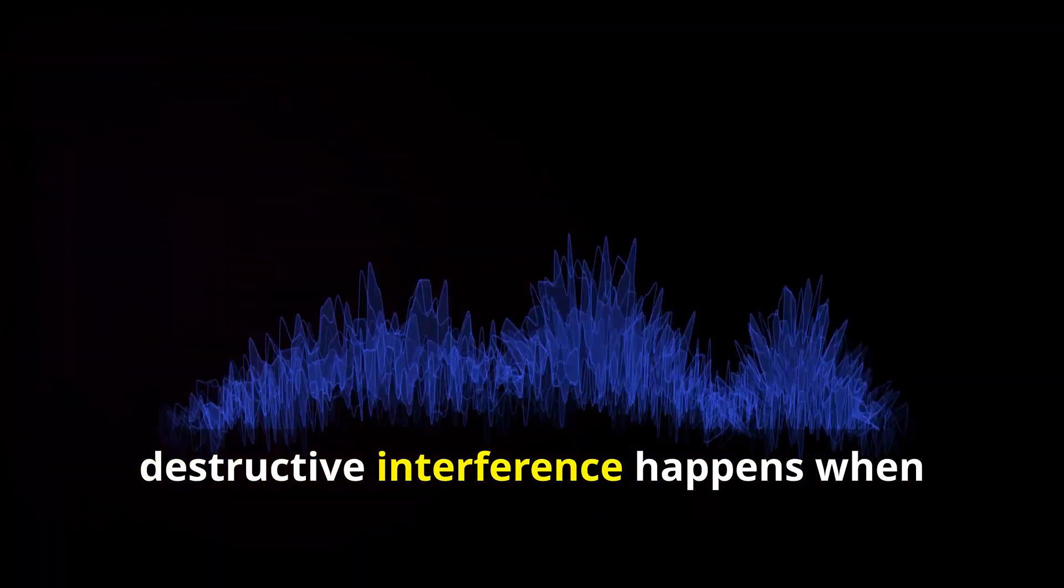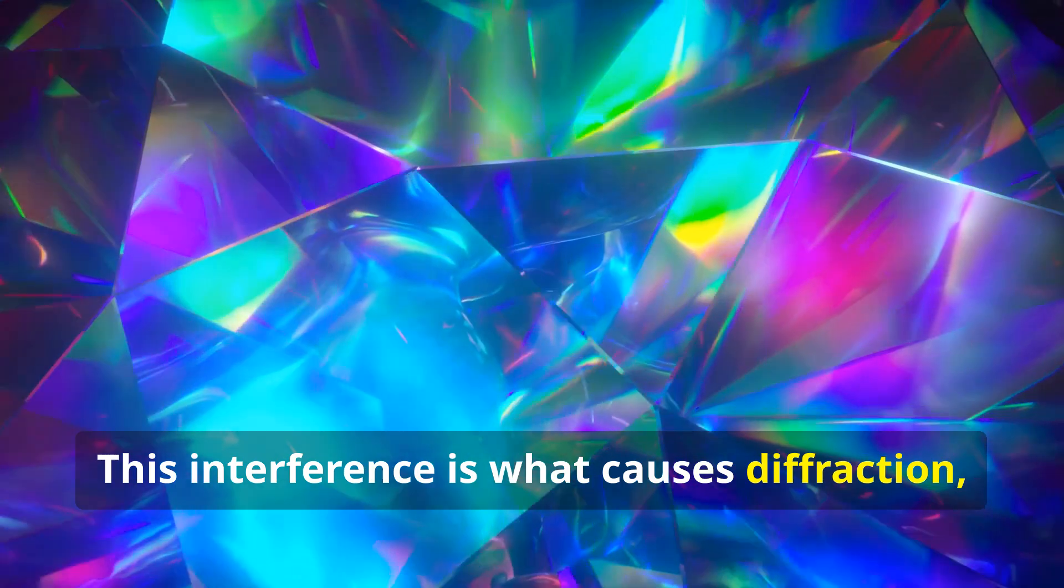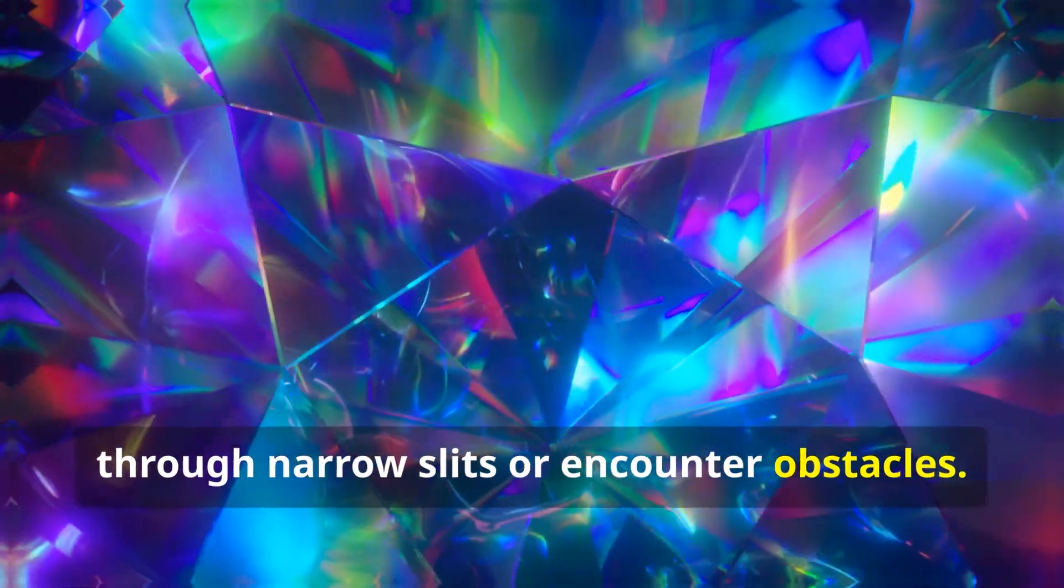On the other hand, destructive interference happens when opposite waves cancel each other out. This interference is what causes diffraction, which we can observe when waves pass through narrow slits or encounter obstacles.